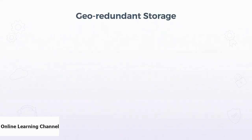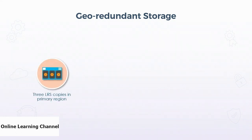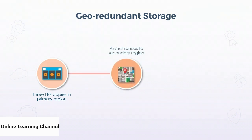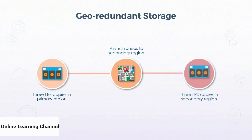Geo-redundant storage is a service for applications that require high availability or are globally distributed. Data is written in the standard locally redundant form — writing to three different locations within a single data center. Then an asynchronous process replicates the data to a secondary region, where it is written locally three times. The net result is locally redundant storage in two different regions.